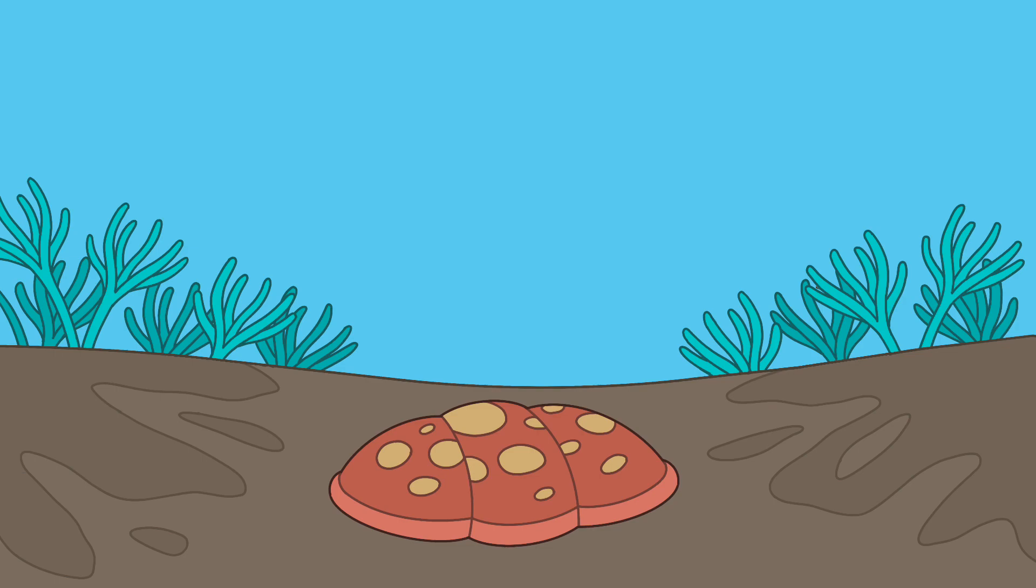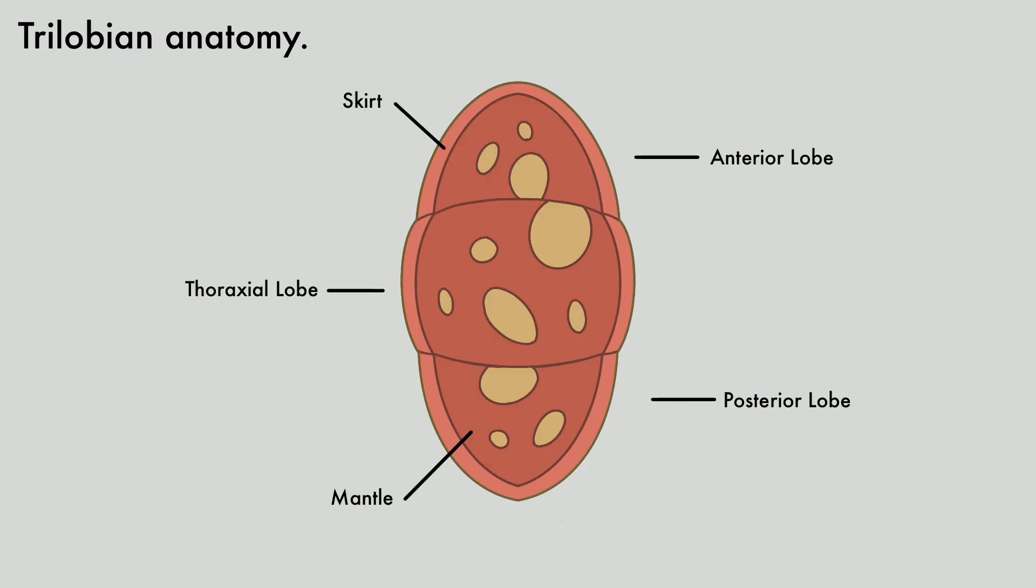Trilobians were the first animals to evolve bilateral symmetry. Trilobians are composed of two parts, the mantle and the skirt like the Zoocirculids, but are divided into three lobes: the anterior lobe, the theraxial lobe, and the posterior lobe.